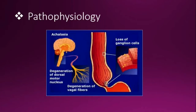Pathophysiology of achalasia cardia: there will be thickening of circular muscle fibers in the distal esophagus, mesenteric inflammation, depletion of ganglionic cells, neural fibrosis, reduced nitric oxide, and reduced vasoactive intestinal peptide (VIP). There will be absence of peristalsis and dilatation of the proximal part of the esophagus.